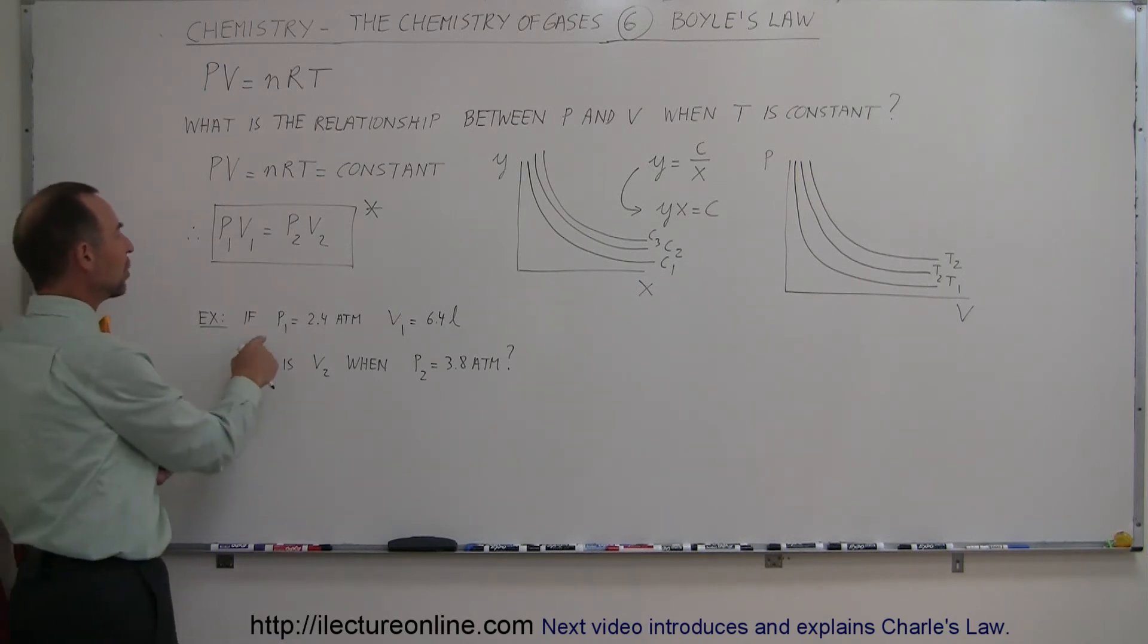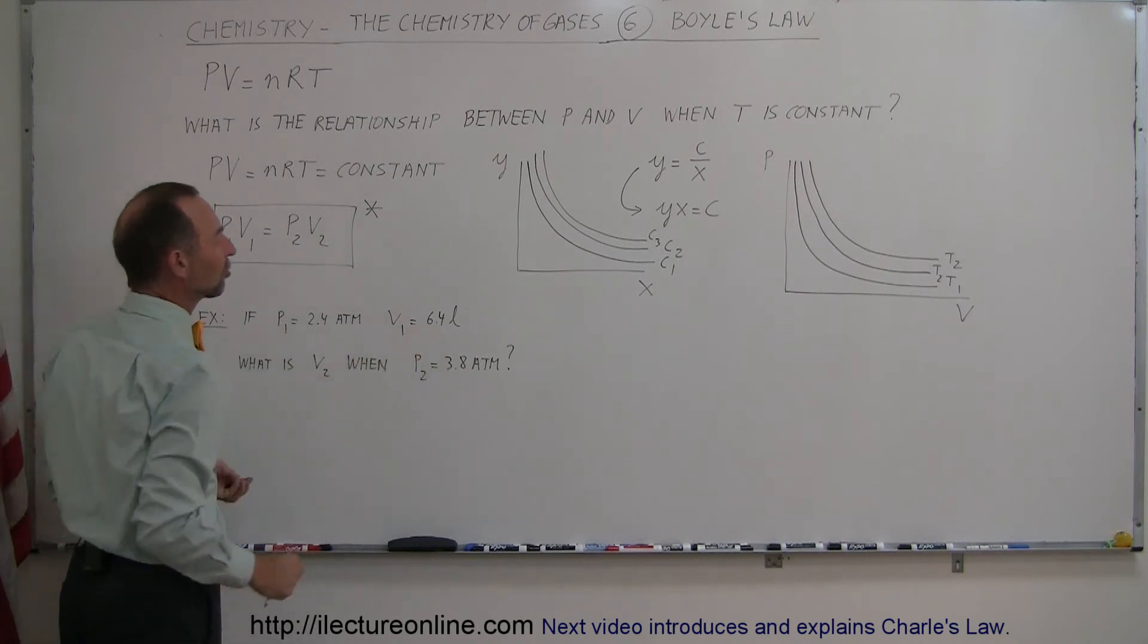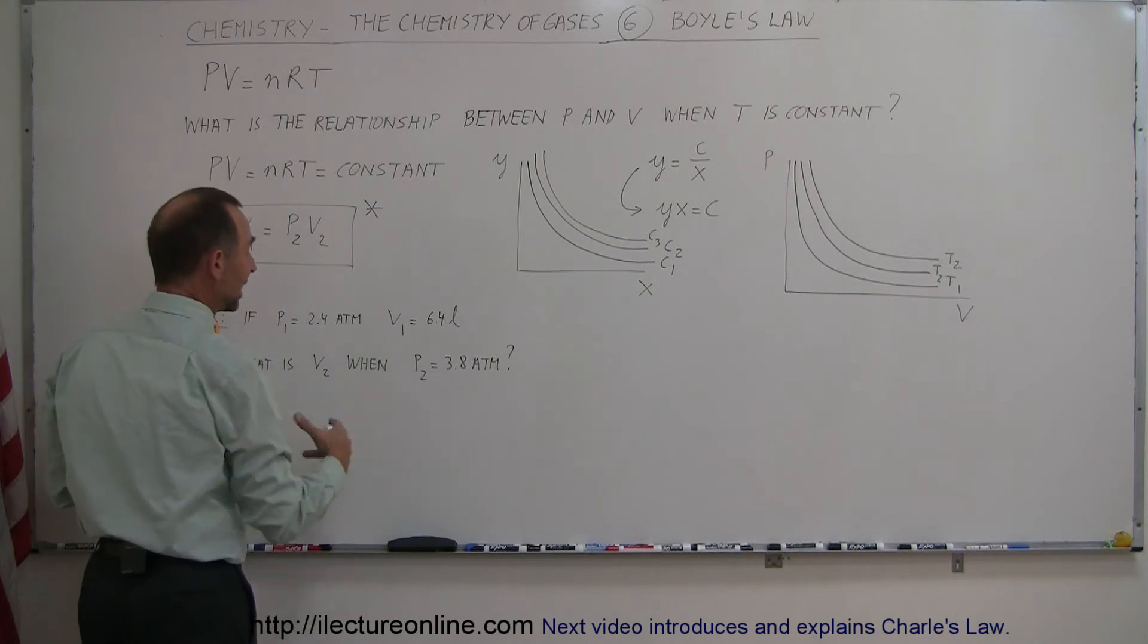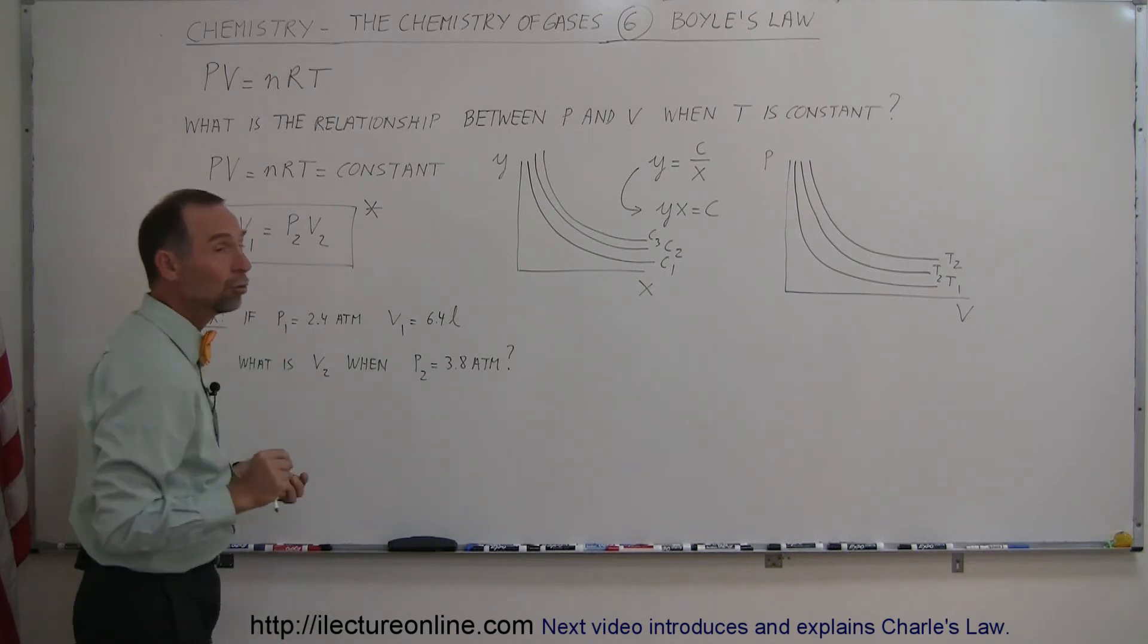For example, what if we know that pressure 1 was 2.4 atmospheres and volume 1 was 6.4 liters? Now, we change the pressure to 3.8 atmospheres, so we increase the pressure. What will now be the new volume?